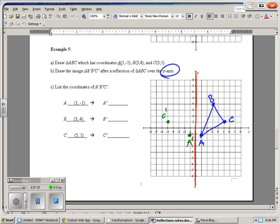And then B is 3 to the right, so B prime would be 3 to the left. And you can see that this is congruent to the original. We call this the pre-image. We call this the image.